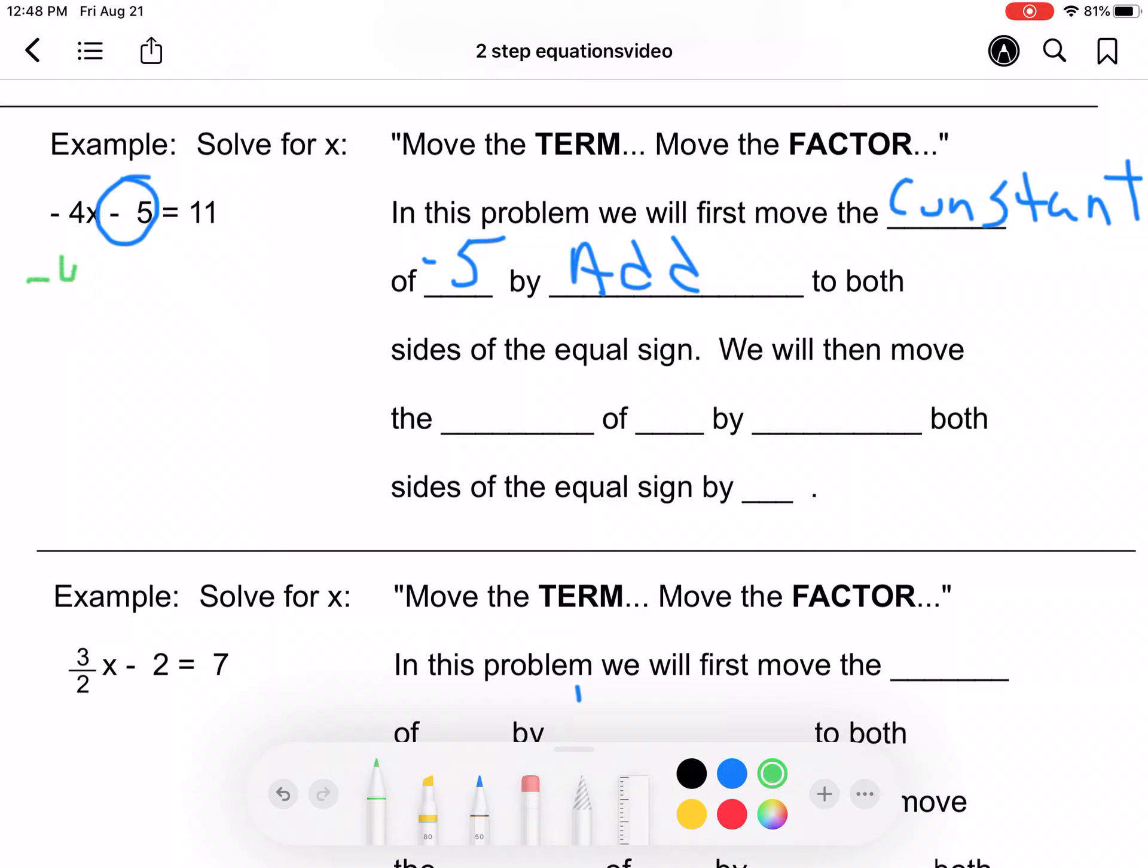So we will repeat our steps. We will bring our negative 4x. I'm sorry. We need to add 5 to both sides. So we're left with negative 4x is equal to 16.